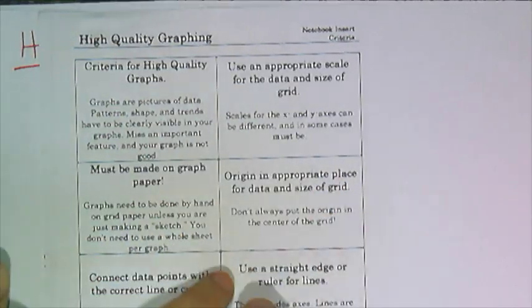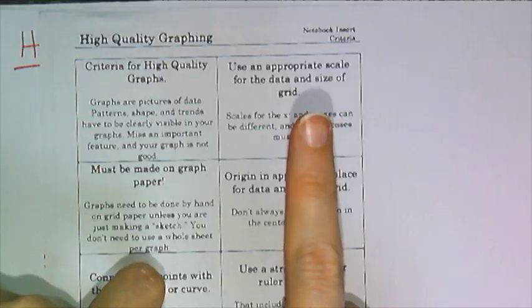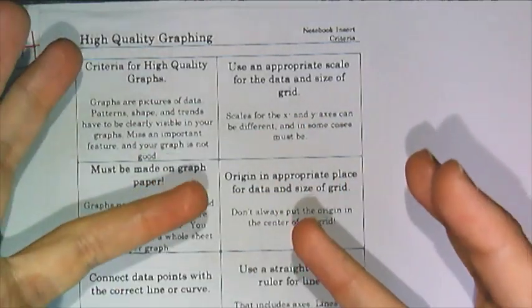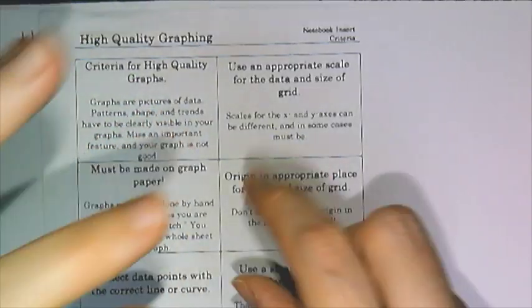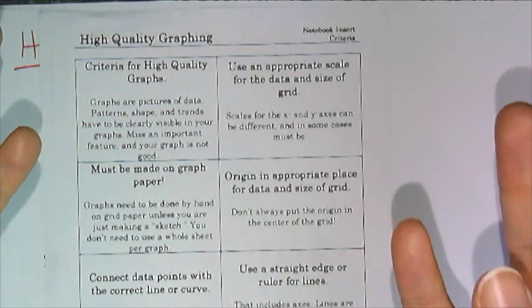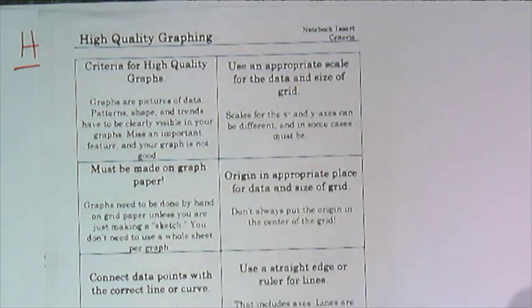A lot of people, when you first start graphing, you automatically put the origin in the center of the grid, and that's actually not the best way to do things because you want to see the best picture of the graph, and sometimes that means you have to take the origin and move it around. So if your graph is entirely in the first two quadrants, above the x-axis, then who cares about what's below the x-axis? You don't need to put the origin in the center. Sometimes you might need to drag it down to see the shape of the graph.